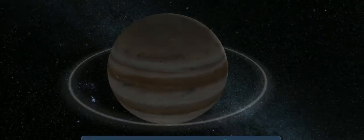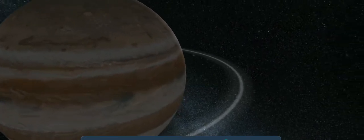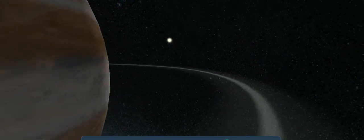Jupiter has a ring system made up of dark dust particles, which is less than 30 kilometers in thickness.